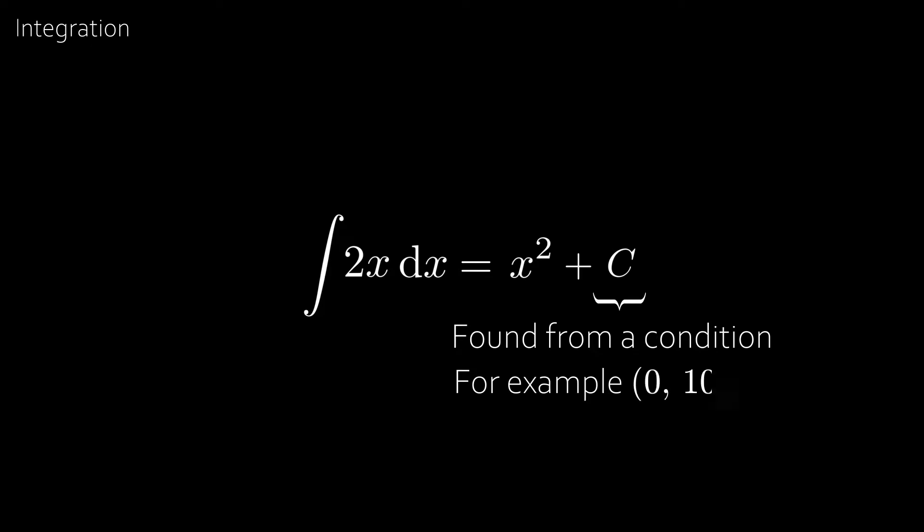But let's say we started with just 2x and wanted to go back. Then we write the anti-derivative or integral with a curly line and a dx at the end so you know what you're integrating with respect to. And this is equal to increasing the power by 1 giving us 2x squared and dividing by the power. The 2's then cancel out giving us x squared. But this isn't the same as x squared minus 5 or even x squared plus 1000. So what we always must do is add a constant c. And c is usually found from some sort of condition. For example the original curve passes through the coordinate 0, 1000 which would give us x squared plus 1000.